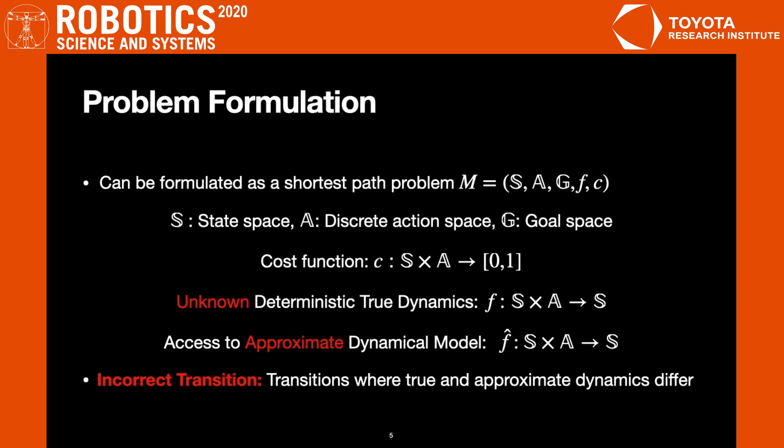For the purposes of our work, we assume that we have access to an approximate dynamical model f-hat that predicts the successive state for any transition. To quantify the inaccuracy of our approximate dynamical model, we introduce the notion of an incorrect transition, which is any transition where f and f-hat differ.